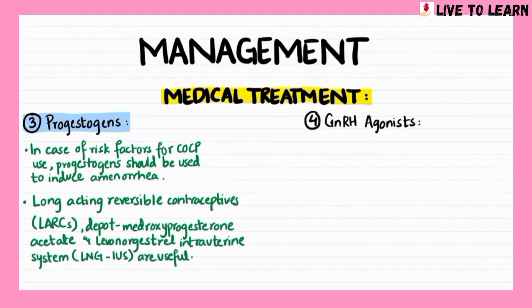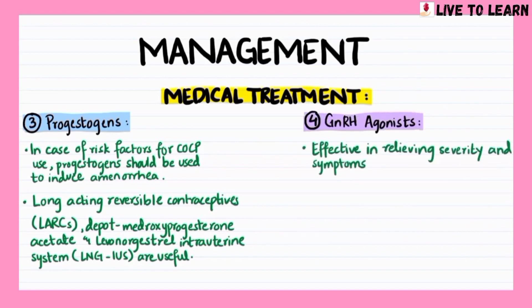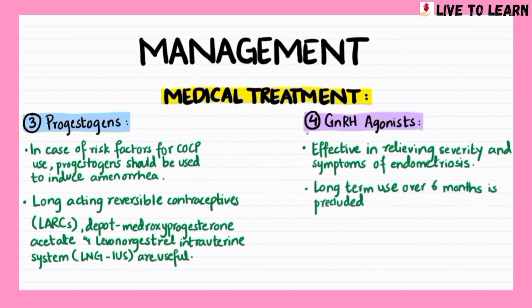Gonadotrophin-releasing hormone agonists are effective in relieving severity and symptoms of endometriosis. However, long-term use over six months is precluded because drug-induced osteoporosis results.